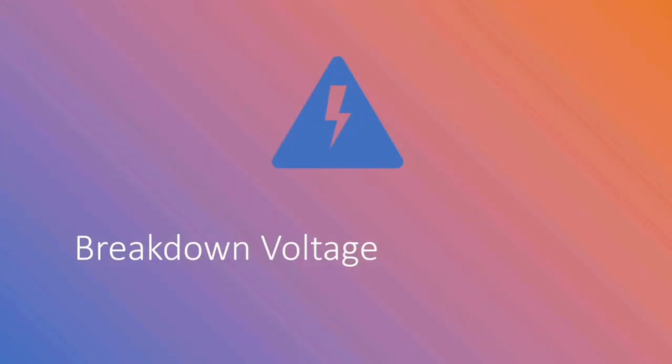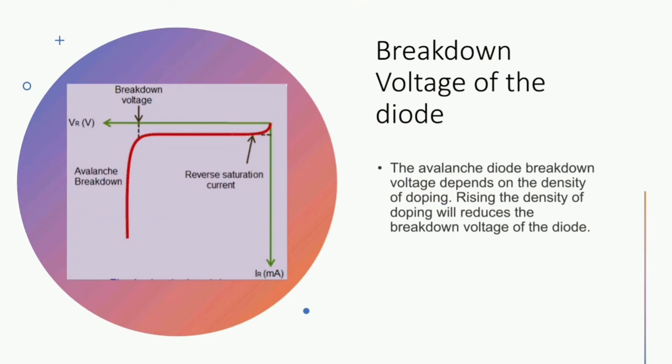Breakdown voltage of the diode. As you see here is a graph on the breakdown voltage of the diode. The avalanche diode breakdown voltage depends on the density of doping. Rising the density of doping will reduce the breakdown voltage of the diode.